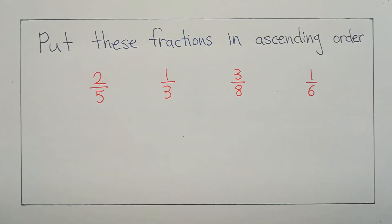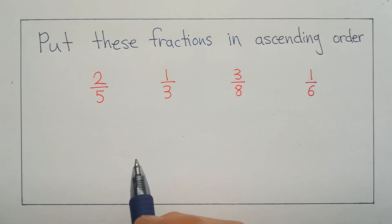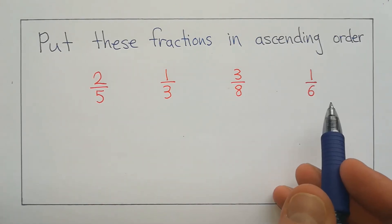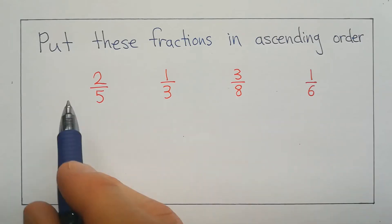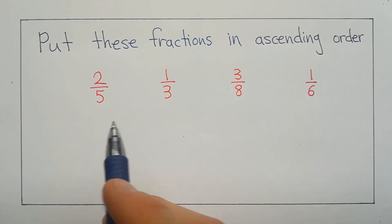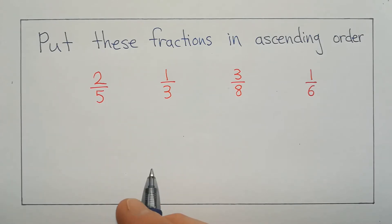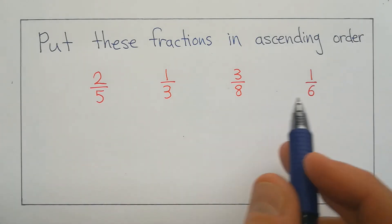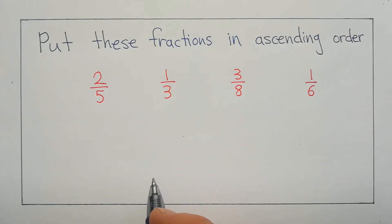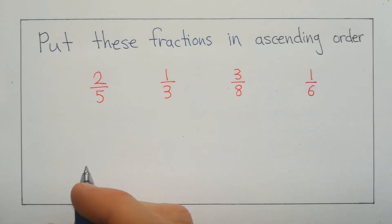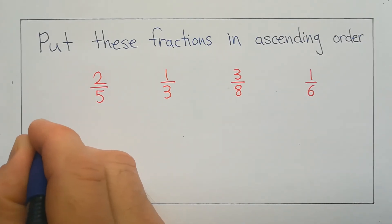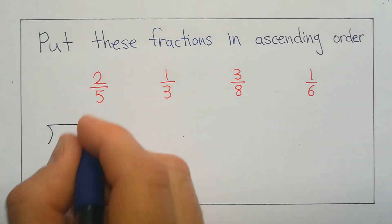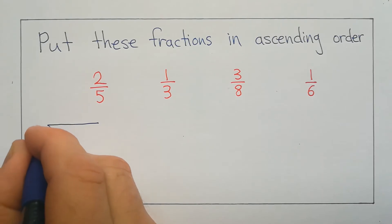At first it's not obvious that this is a division question. They're asking us to put these fractions in ascending order, so from smallest to largest. A lot of people would be tempted to keep these as fractions, work out a common denominator, and then sort them out that way. Which is fine — that would work — but with the denominators we've got here, you could end up needing quite a large common denominator. So I'm going to show an alternative, and that is to use division. So if we start with 2 fifths, I'm going to do my bus stop, put the 2 inside and the 5 on the outside.